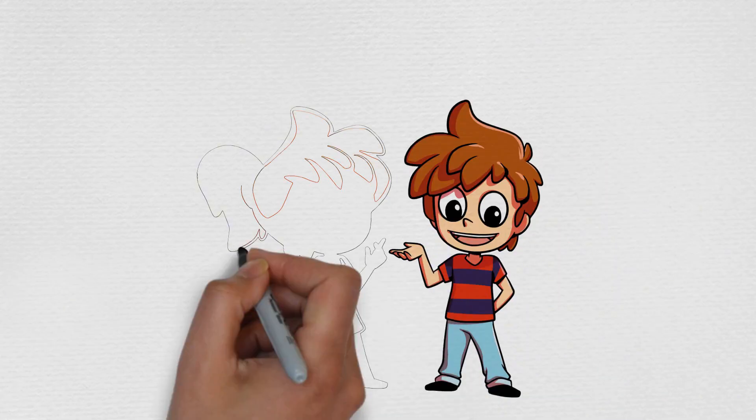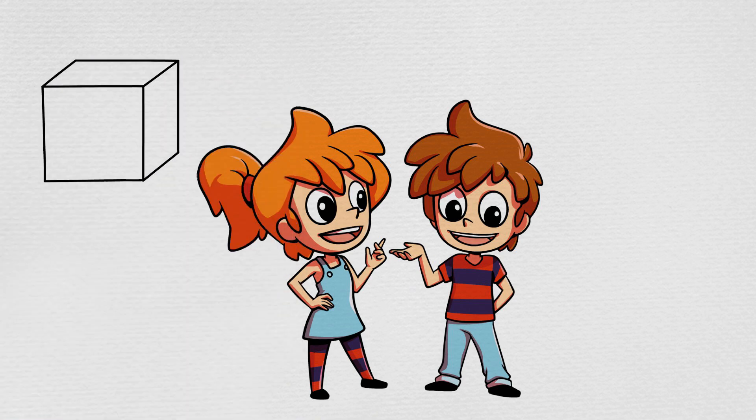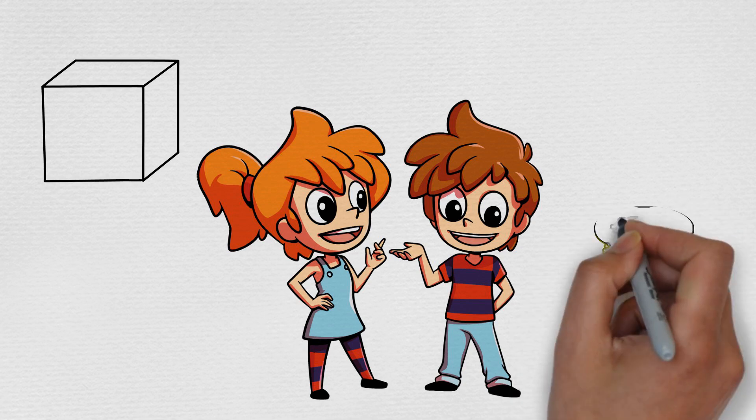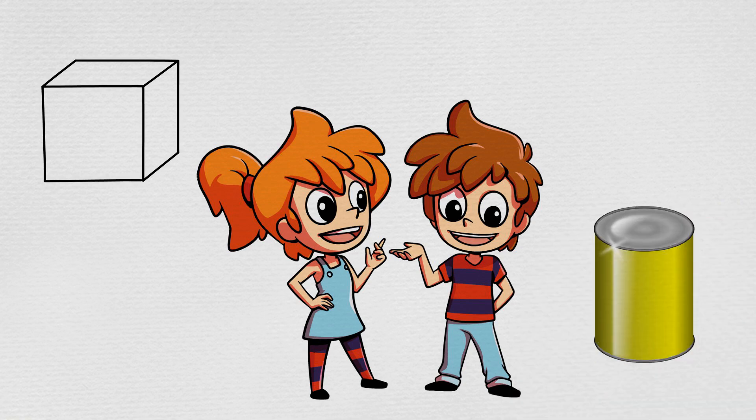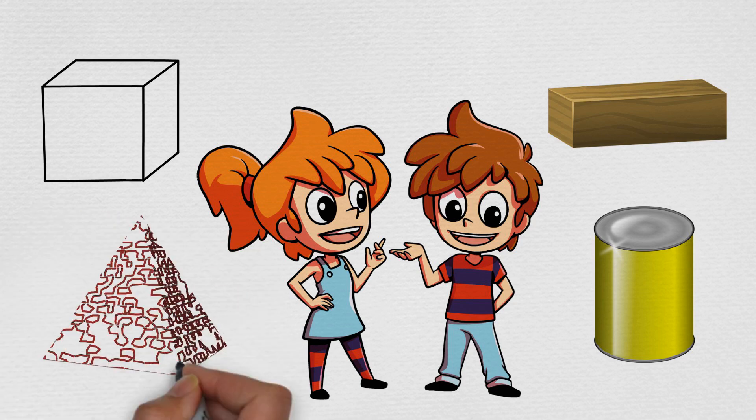Now, Max and Min wanted to have a closer look at three-dimensional solid objects, so they looked around and found some solid objects: a plastic cube, a soup can, a small block of wood, and they even found a model of a pyramid.